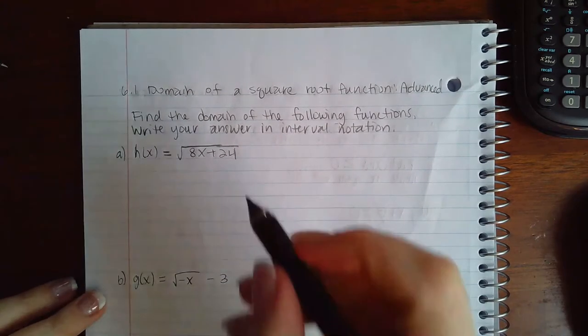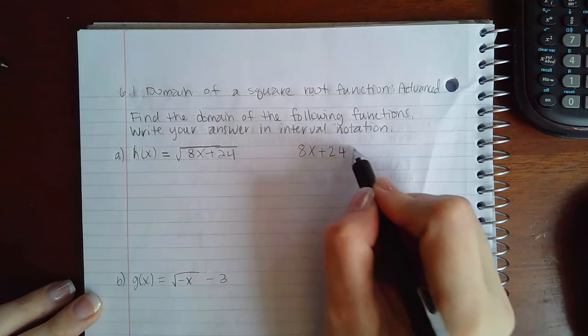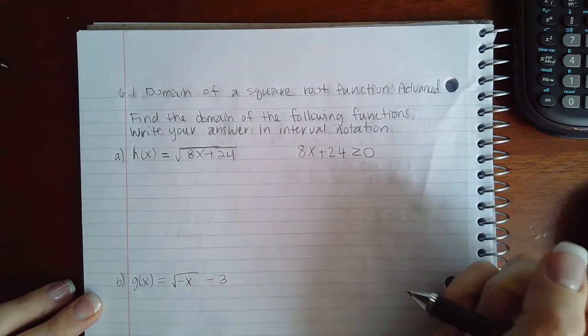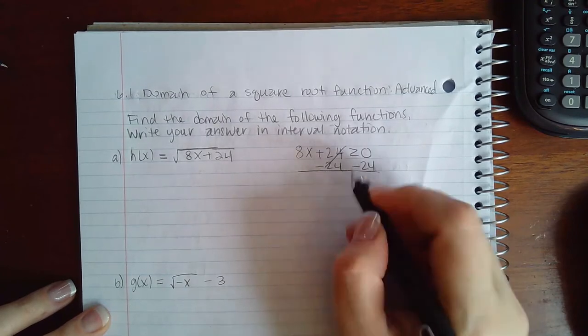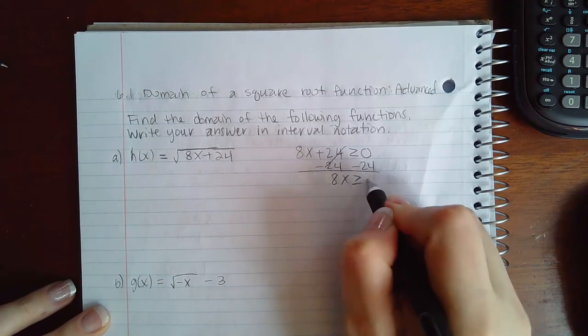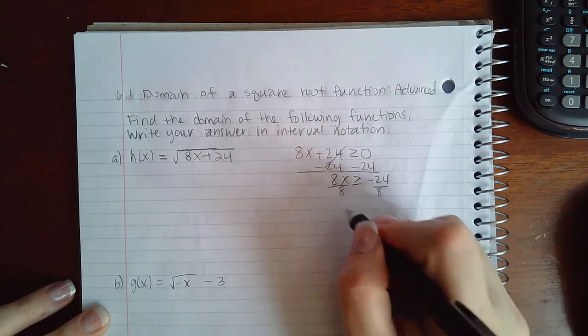We still have to take what's inside the radical greater than or equal to zero. So then I'm going to continue doing my solving and then I'm going to divide by 8.